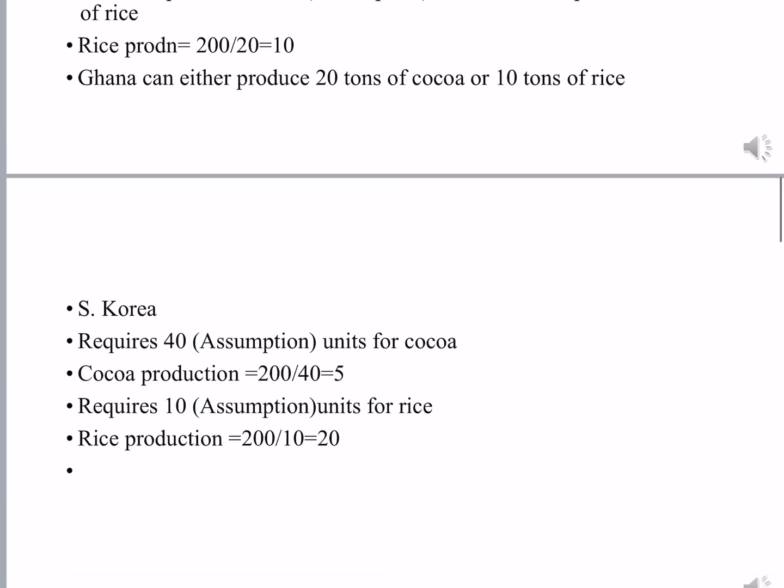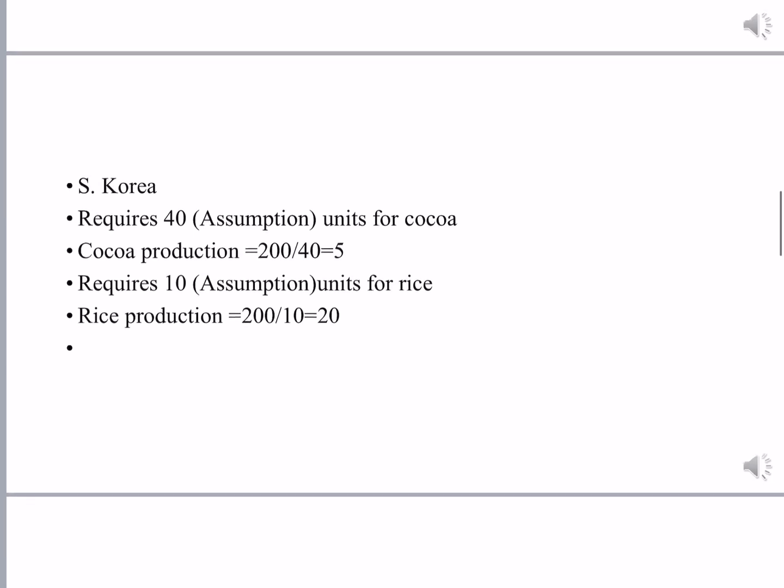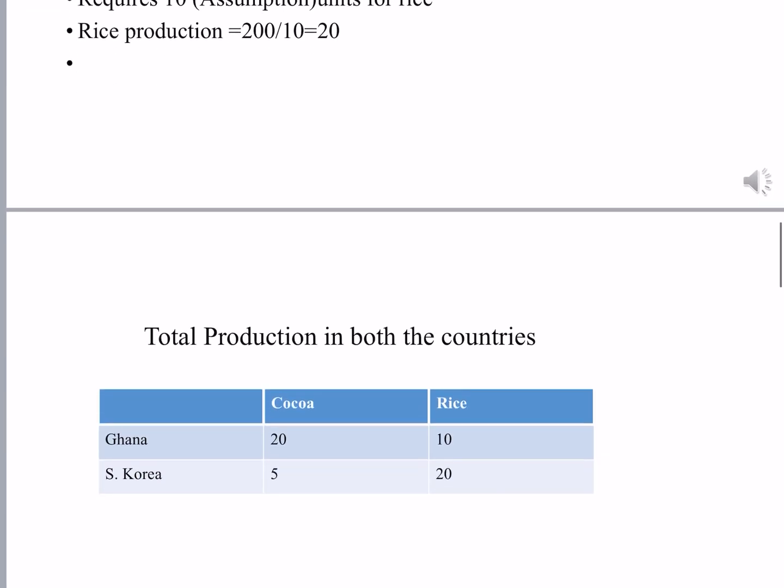In the same way we calculate the production in South Korea. South Korea requires 40 units for cocoa production, so cocoa production in South Korea is 200 divided by 40, which is equal to 5. South Korea requires 10 units for rice production, so rice production in South Korea is 200 divided by 10, which is equal to 20.